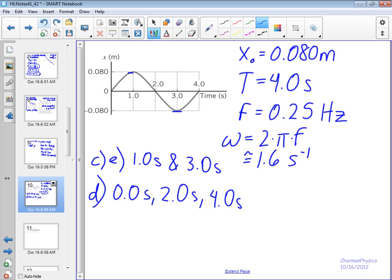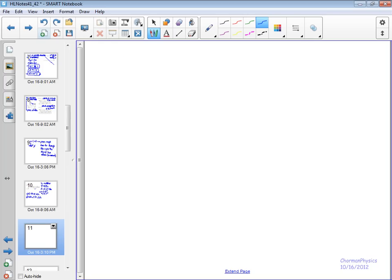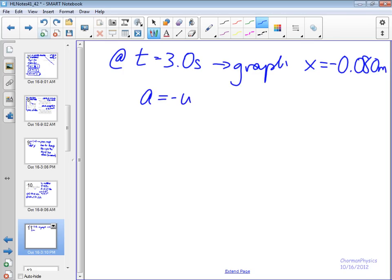What is the acceleration of the object at 3 seconds? Well, if we go to 3 seconds, when we take the amplitude, at time equals 3 seconds, we go to the graph, and we see that displacement is equal to negative 0.080 meters. So, we can actually calculate the acceleration. I gave you this one equation before. A is equal to negative omega squared times x. And you may not be sure exactly where that came from.